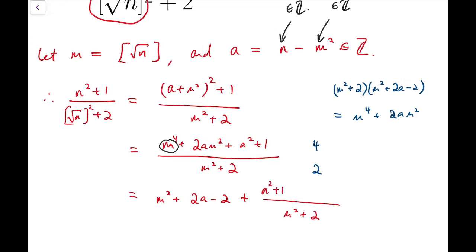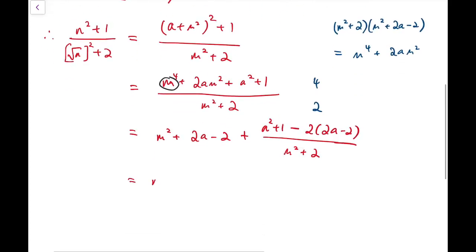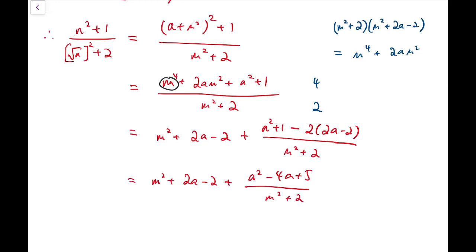So we add a fraction, which is a squared plus 1 minus the remaining constant term — the so-called constant, meaning unrelated to m — that is 2 times 2a minus 2. And we simplify, so the numerator becomes a squared minus 4a plus 5.